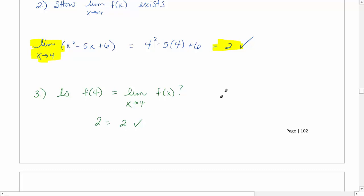Therefore, by the continuity test, f of x equals x squared minus 5x plus 6 is continuous at x equals 4.